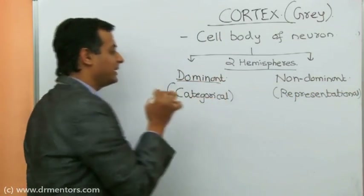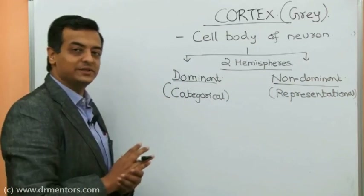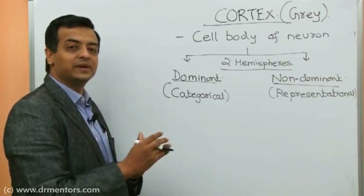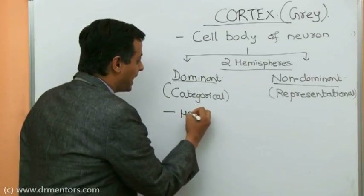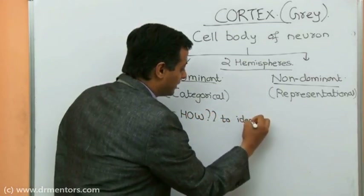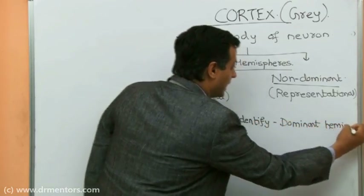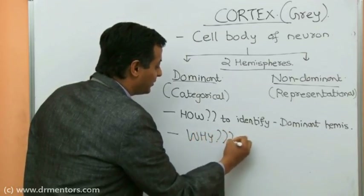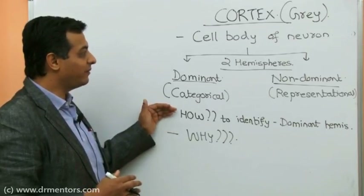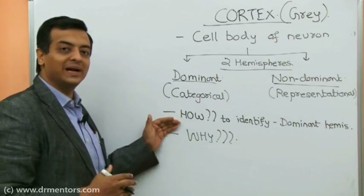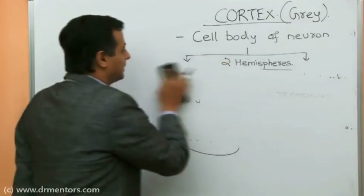The non-dominant hemisphere is also called the representational hemisphere. My question to all of you: how do you differentiate between the two — which hemisphere is dominant and which is non-dominant? I want you to answer two things: first, how to identify the dominant hemisphere, and second, why we need to identify it. It's not enough to know how — it's important to know why, because that answer determines what we tell the patient after the MRI.